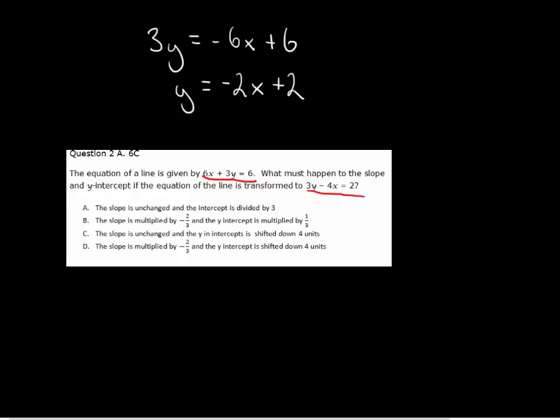Add 4x to both sides and you'll end up with 3y equals 4x plus 2. Divide both sides by 3 and you'll end up with y equals 4 thirds x plus 2 thirds. And now, you can compare the slopes and the y-intercepts. Clearly, the slope has been changed. So A and B are out.